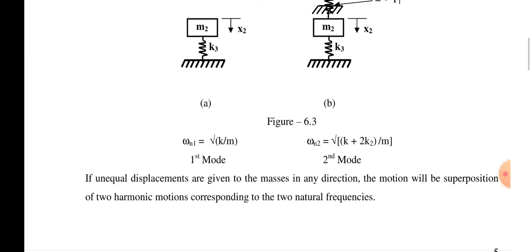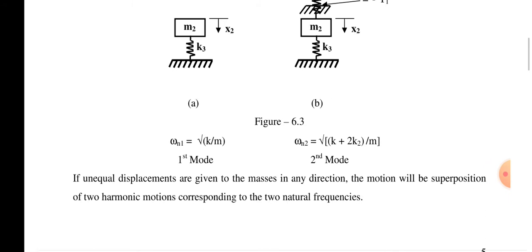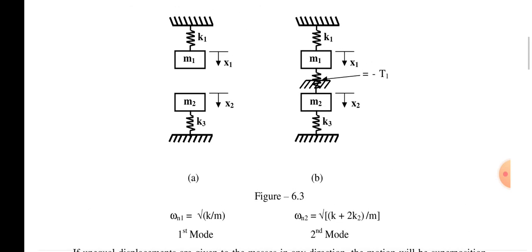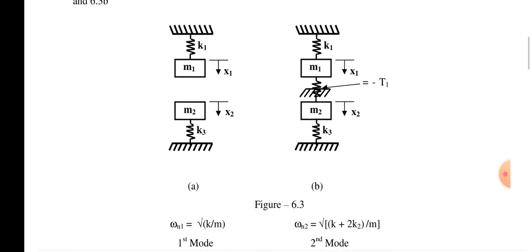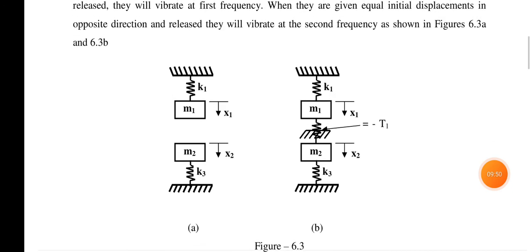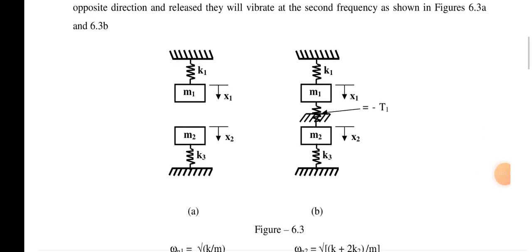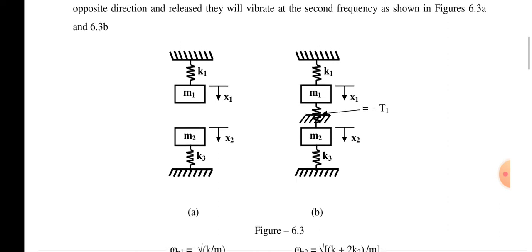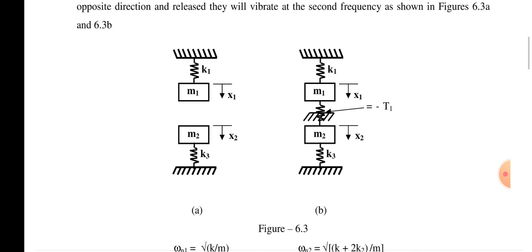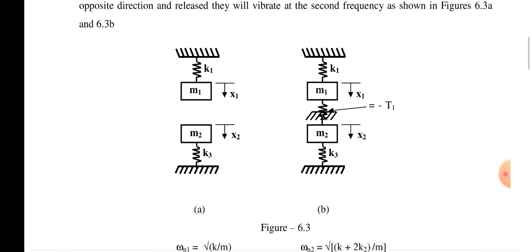If unequal displacements are given to the masses in any direction, the motion will be a superposition of the two harmonic motions corresponding to the two natural frequencies: ωn1 = √(k/m) and ωn2 = √((k + 2k2)/m). Here x1 and x2 represent deflections, while k1, k2, k3 apply restoring spring forces and inertia forces act accordingly. This concludes the discussion on natural frequencies ωn1, ωn2 and mode shapes for the two-mass, three-spring system.